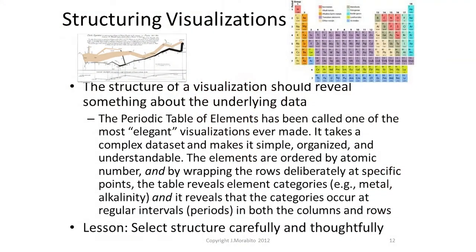We also want to structure our visualization, if possible, to reveal something about the underlying data. Napoleon's march into Russia — that graphic told us something about the underlying data. The same is true with the periodic table of elements, which has been called one of the most elegant visualizations. It organizes data by atomic number, but based on where it makes its bends in columns and rows, it tells us whether we're looking at acids or alkaloids or metals. The image itself tells us something about the data — but that's more true of the information graphic, not so much the pie chart.